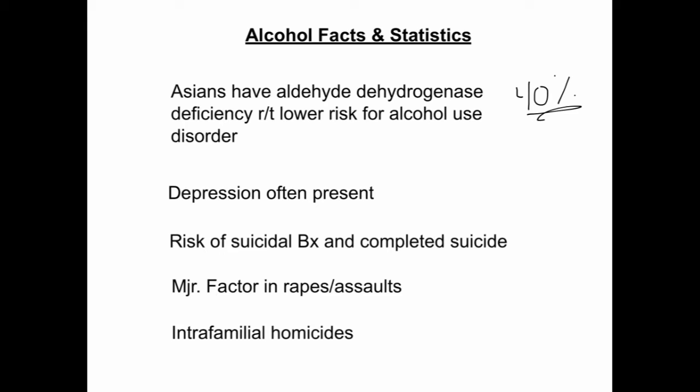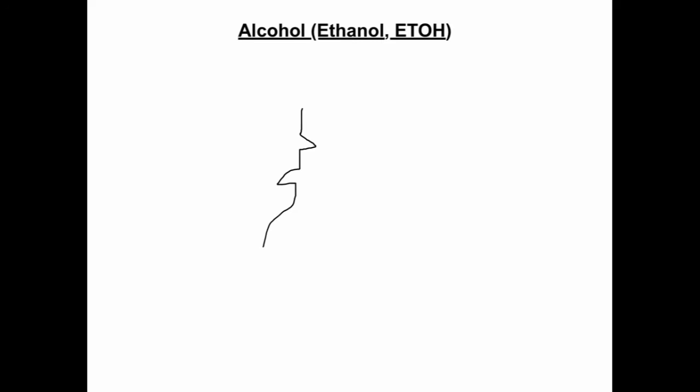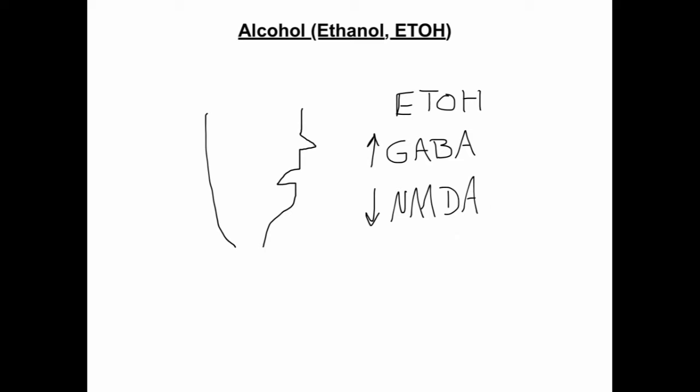Alcohol, or ethanol, also known as ETOH, is a sedative, anesthetic, and central nervous system depressant that increases the concentration of gamma-aminobutyric acid, or GABA, which is a major inhibitory pathway in the brain, and inhibits N-methyl-D-aspartate, or NMDA receptors, which are major excitatory pathways in the brain.